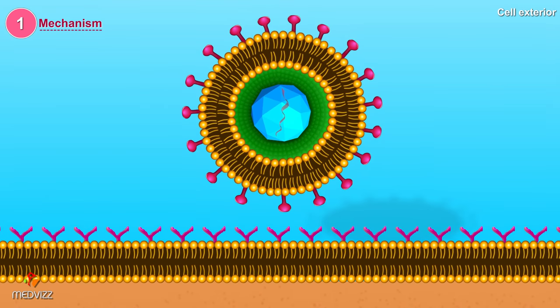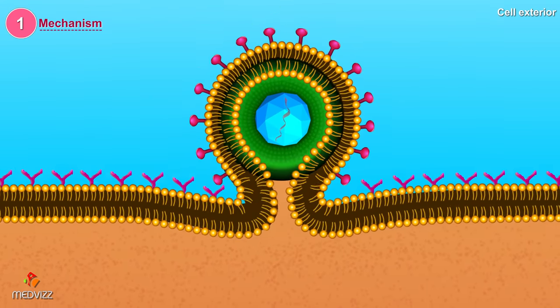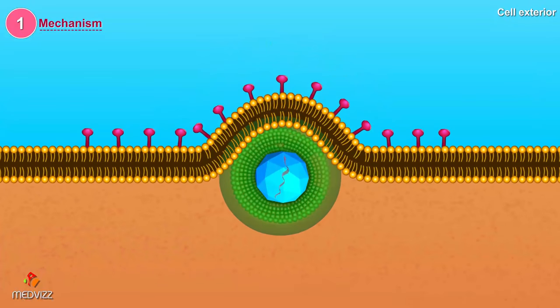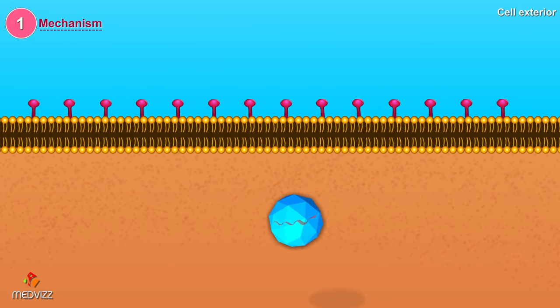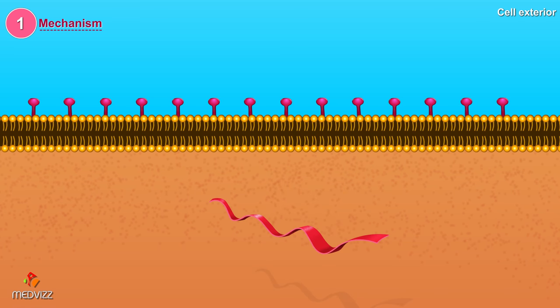The envelope of the virus fuses with the plasma membrane of the host and the nucleocapsid is released directly into the cytoplasm. The nucleic acid then separates from the protein coat.